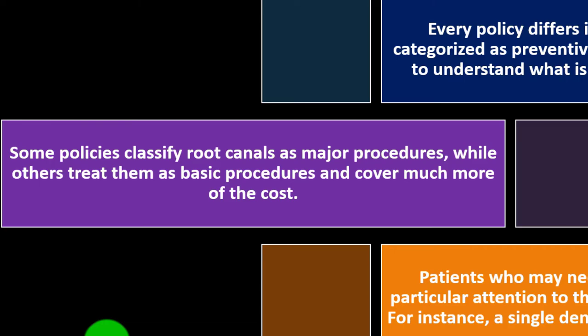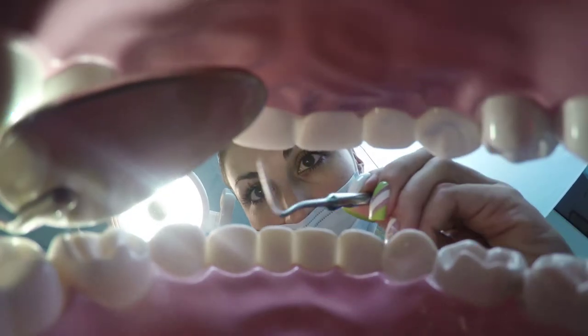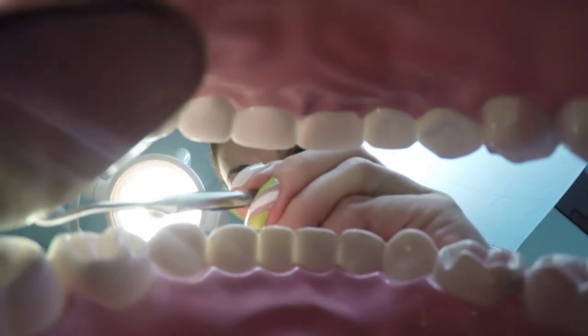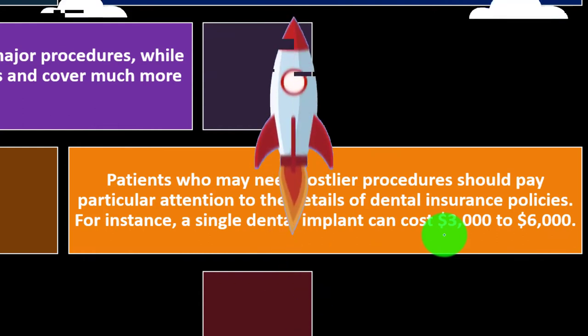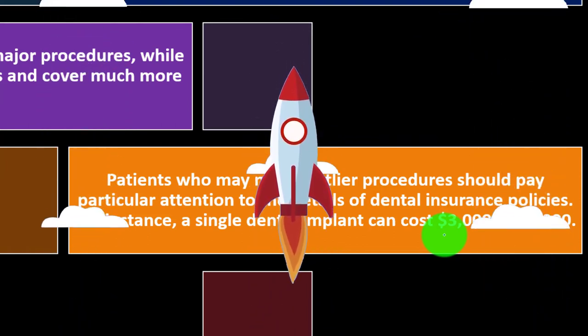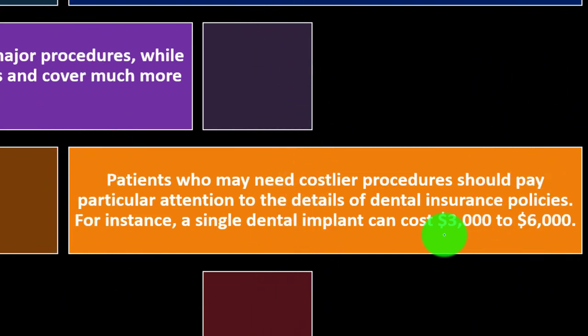Some policies classify root canals as major procedures, while others treat them as basic and cover much more of the costs. Patients who may need costlier procedures should pay particular attention to policy details — for instance, a single dental implant can cost $3,000 to $6,000. When you get into bigger dental procedures, you can see how the bill could skyrocket, which is why you'd want insurance, but that's not quite how dental insurance is set up, as we'll see when we get to yearly maximums.